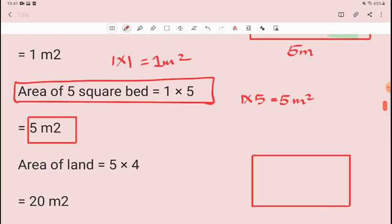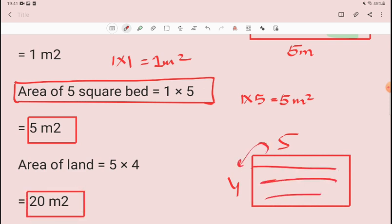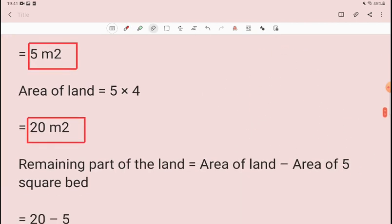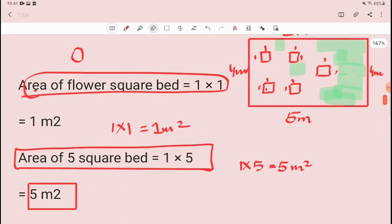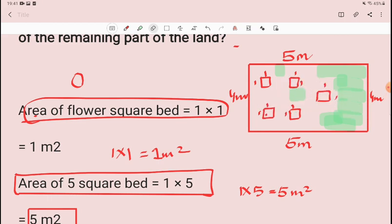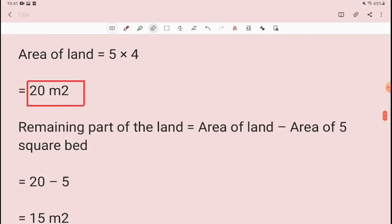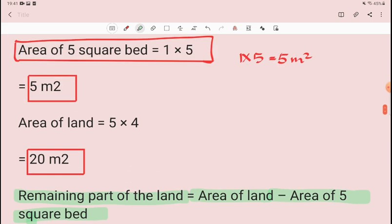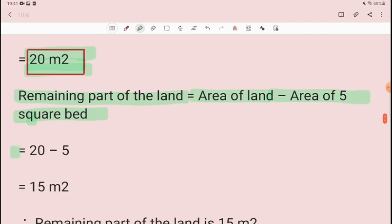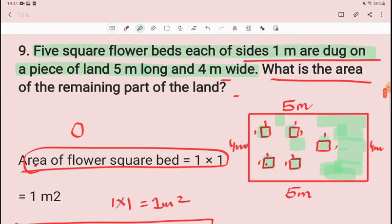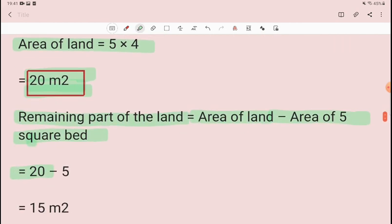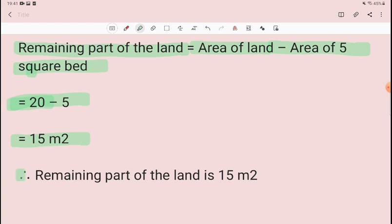Now area of land, the whole area is this. We have seen this. This is 5 and this is 4. Area of total land, this whole land is 5 into 4. So the whole land is 20 meter square. Area of whole land, the whole land is this area.